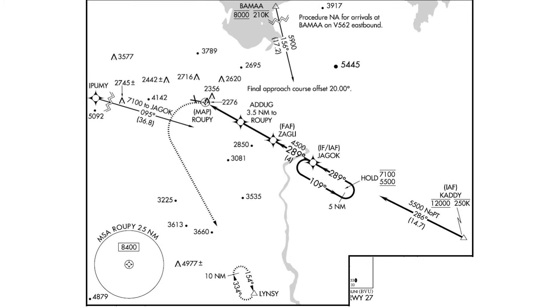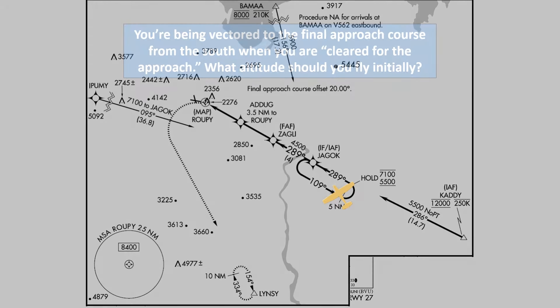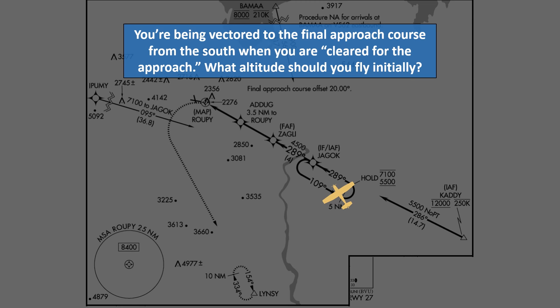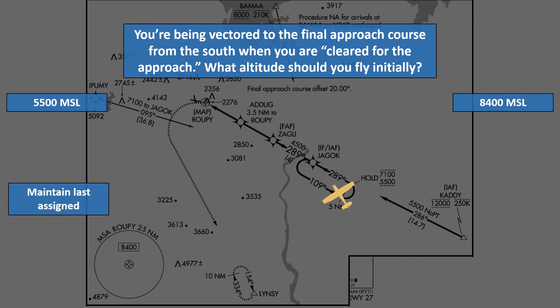Here's the first question. You're being vectored to the final approach course from the south when you're cleared for the approach. What altitude should you fly initially? 5500? 8400? Maintain last assigned? Or 4500?